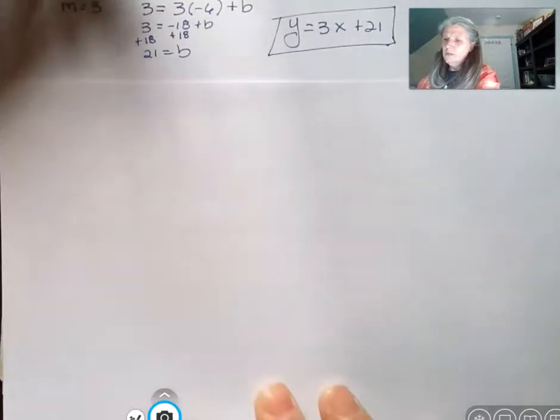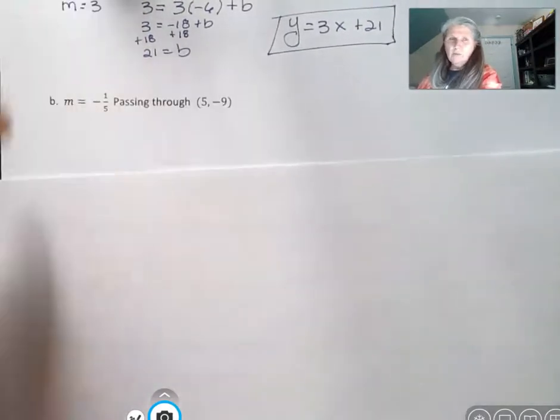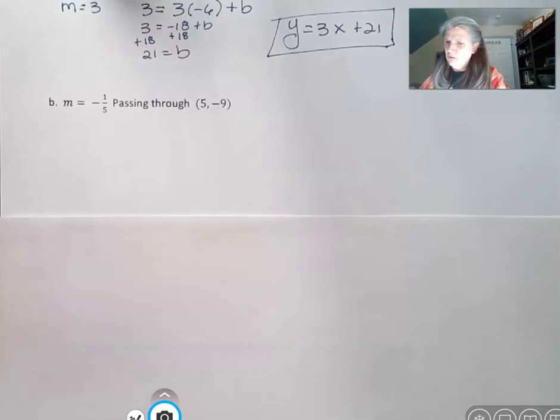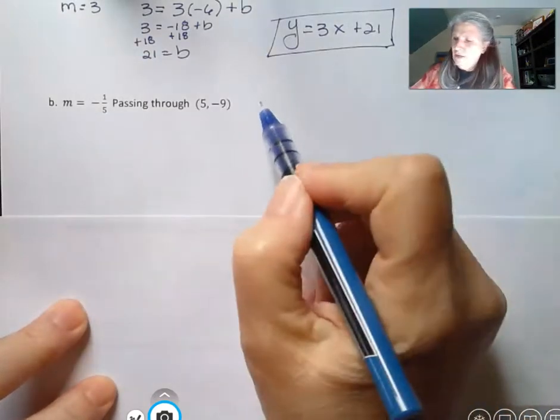So let's look at another example of that. We have a slope of negative 1 fifth, and it's passing through the point 5, negative 9. Again, I want the mx plus b form.